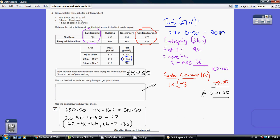So if you add together the turf cost, the landscaping cost, and the garden clearance cost, we get a total of £550.50. So that's how much he needs to charge the client.